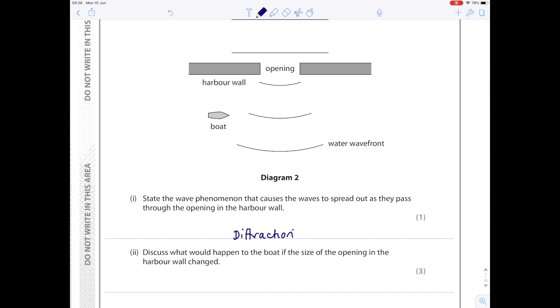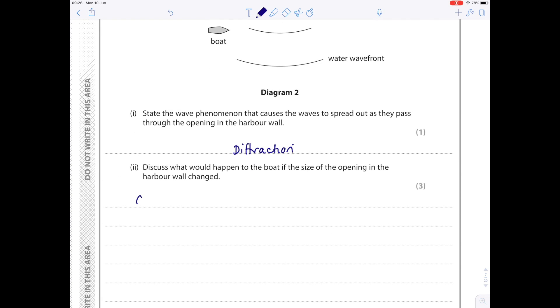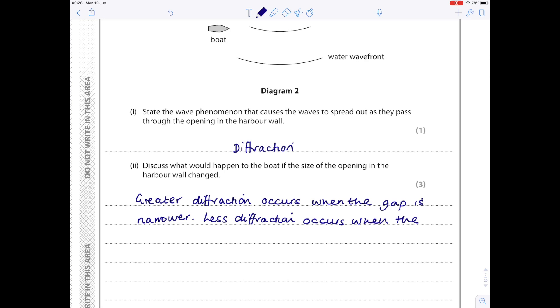Discuss what would happen to the boat if the size of the opening in the harbor wall changed. Remember, maximum diffraction occurs when the gap is the same size as the wavelength. If you increase the size of the gap, then you get less diffraction. If you decrease it, then you get more diffraction. So first we'll make the statement: greater diffraction occurs when the gap is narrower. Less diffraction occurs when the gap is wider. Make a general statement that greater diffraction causes more waves to act upon the boat.